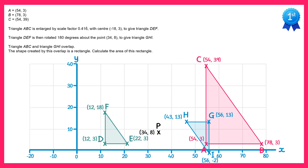The question asks us to find the area of the overlap. The overlap is this rectangle here. The vertical distance of that overlap goes from 3 all the way up to 13, so it has a height of 10. The horizontal distance of that overlap goes from 54 to 56, so it's a horizontal distance of 2. So the area is just 10 times 2, which is 20 units squared.